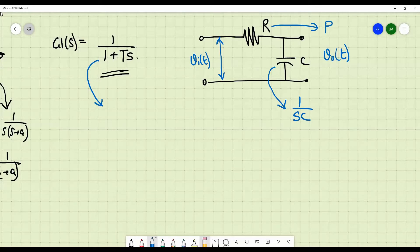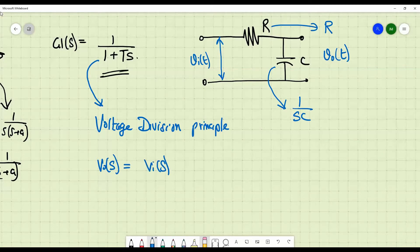So how do you get the output voltage? You have to use the voltage division principle. I am sure you would be learning this in electrical networks. What does voltage division principle state? It states that V0 of S, directly writing in Laplace domain, is equal to input into the output impedance 1 by SC divided by total impedance.